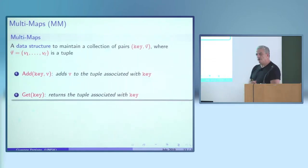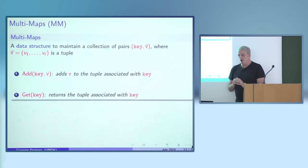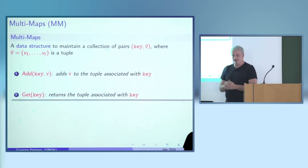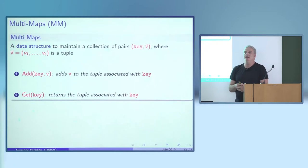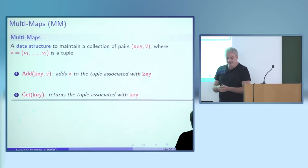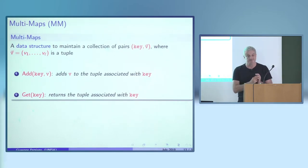This lower bound applies to more than one data structure. For conciseness I'll discuss multi-maps: data structures that maintain a collection of key-value pairs, where each key is associated with a tuple of values v1 through vL. There are two basic operations: get(key), which returns the tuple of values associated with a key, and add(key, v), which appends a value v to the current tuple associated with a key.